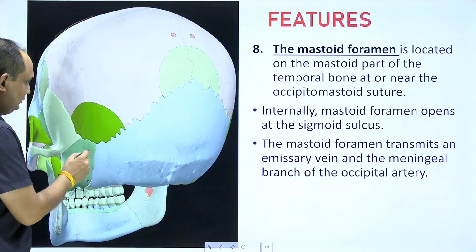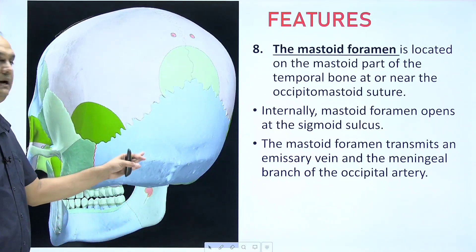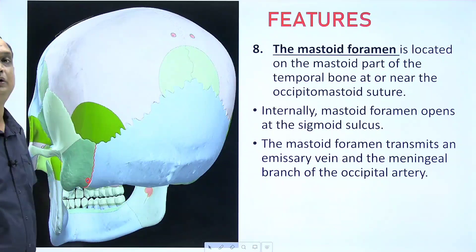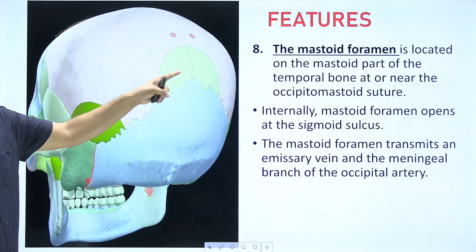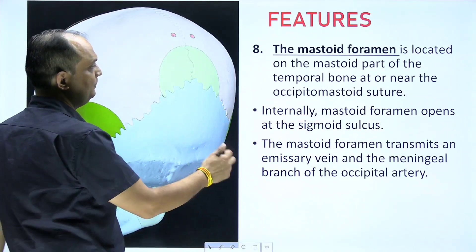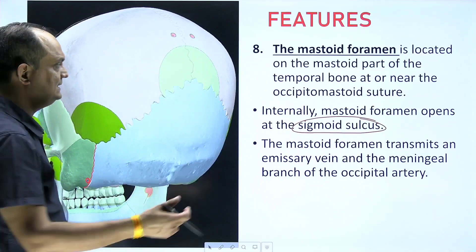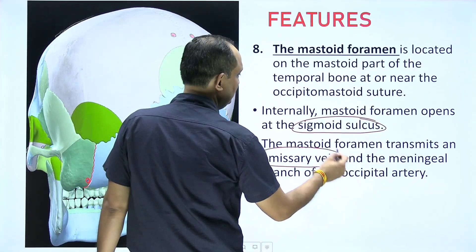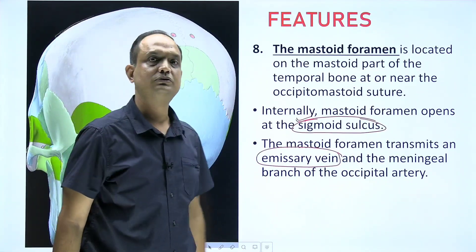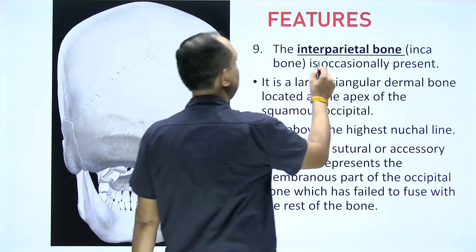In norma occipitalis you will also find the mastoid foramen. There is a parietomastoid suture between the mastoid part of the temporal bone and the parietal bone. Just anterior to the parietomastoid suture, there is a small foramen in the temporal bone called the mastoid foramen. It is located in the mastoid part of the temporal bone or near the occipitomastoid suture, opens internally into the sigmoid sulcus, allows passage of an emissary vein into the sigmoid sinus, and also transmits a meningeal branch of the occipital artery.